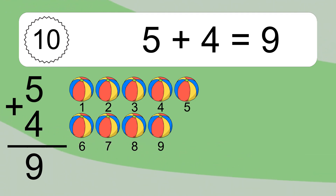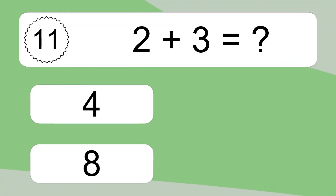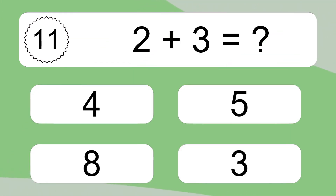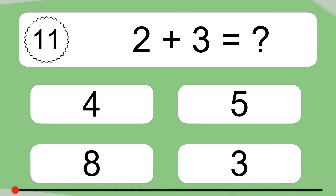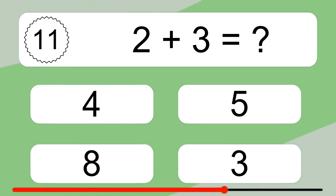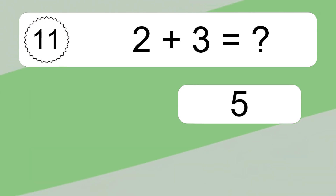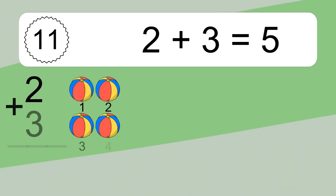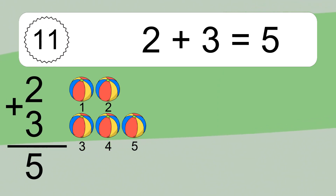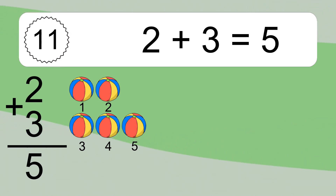2 plus 3 equals what? 2 plus 3 equals 5. Let's count it. 1, 2, 3, 4, 5.